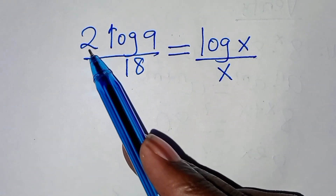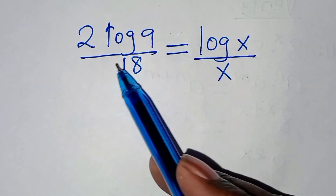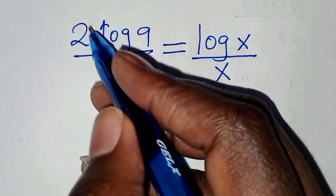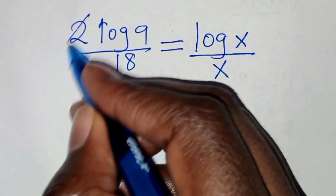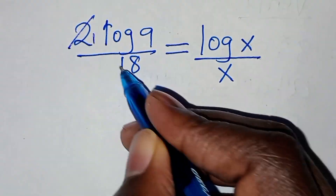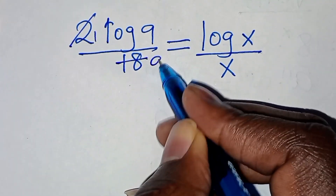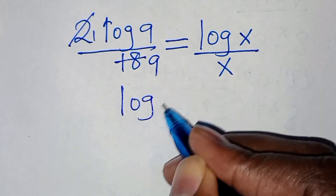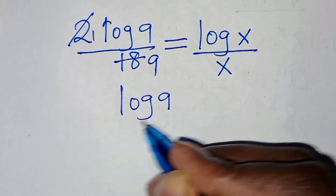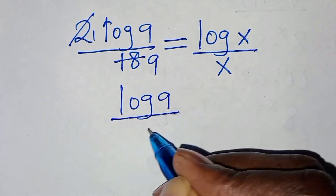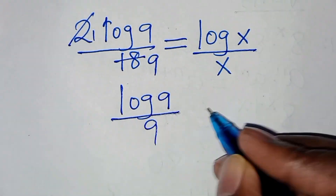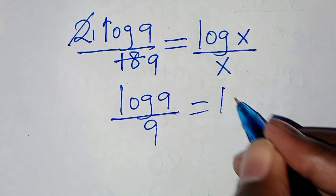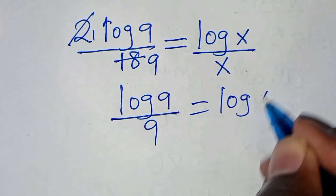Here we have 2 log 9 over 18. Let's simplify by 2: we get log 9 over 9. This is equal to log x over x, so this is equal to log 9.